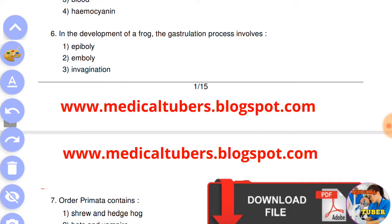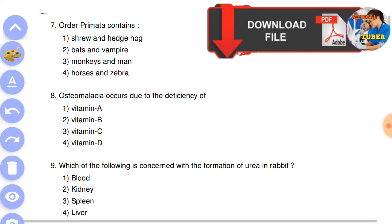Question number six: in the development of a frog, the gastrulation process involves option A - epiboly, emboly, and invaginations. Question number seven: order Primata contains answer is the third, monkeys and men.